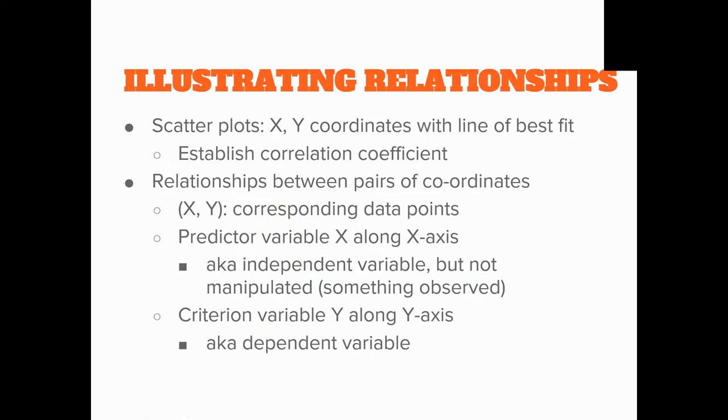If we want to illustrate relationships, we're going to use a scatterplot. You have your x-axis, which is your predictor variable, that's also considered your independent variable. But don't get confused because when you're doing these, you don't normally manipulate the independent variable, it's just something that you've observed. And then your y-axis is going to be your criterion variable or your dependent variable.